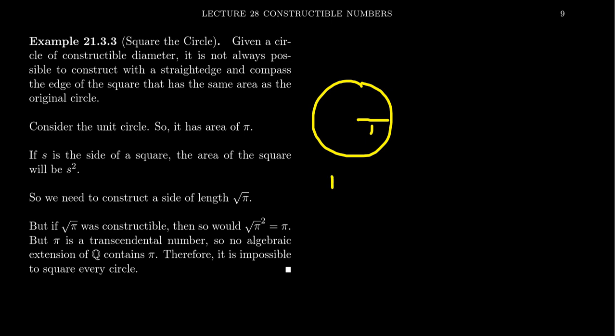By the classic formula, area equals πr². We see that the area of the unit circle would be π in that situation. We want to argue that you cannot construct a square whose area is π.